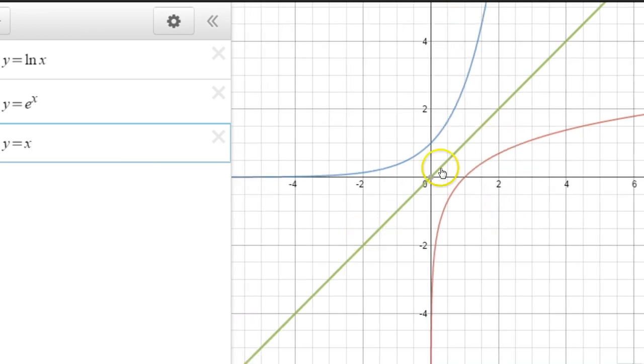But if you were actually able to find the inverse of it, you would first switch the x and y. So you would have x equals the natural log of y.